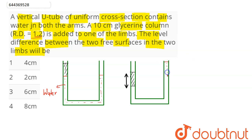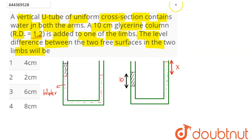The water increases on the other side up to some height. We need to find the level difference between the two free surfaces. If this increase on the other side is height x, then the net increase in height above the reference surface will be equal to 10 plus x.